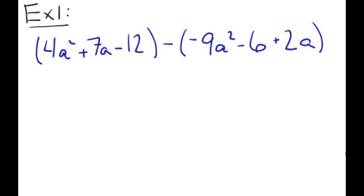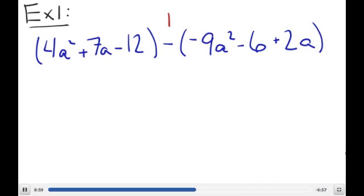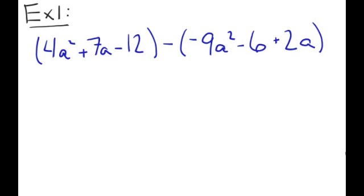So here's our first one. The difference between these and the ones we did before is in the other ones we were adding, but we're not adding, we're subtracting. We have the polynomial 4a squared plus 7a minus 12, and we're going to subtract from that the polynomial negative 9a squared minus 6 plus 2a.